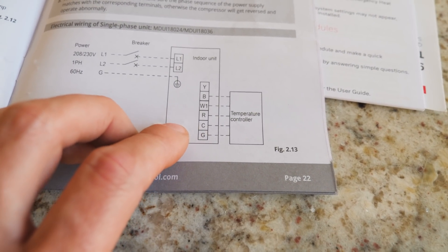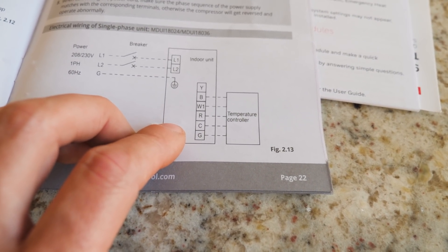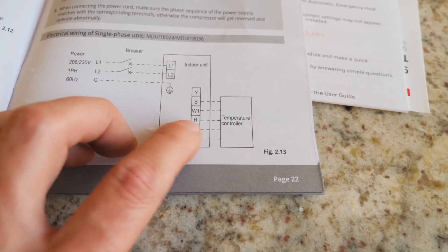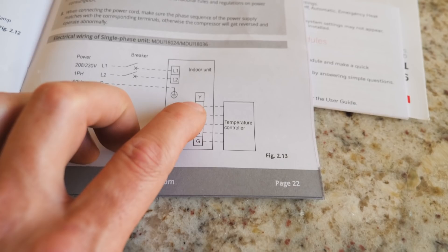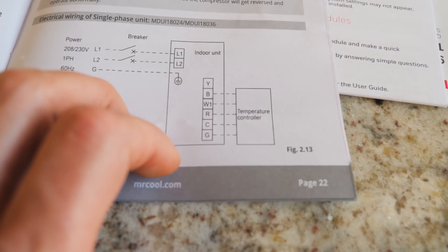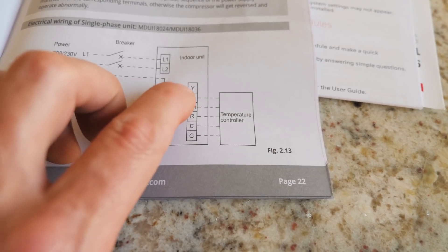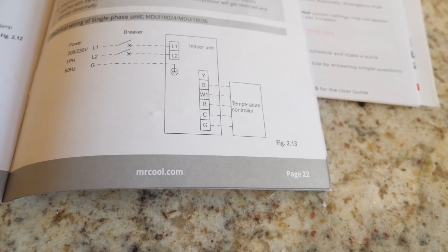But when you go to hook up the thermostat, this is the thermostat to the air handler, says hook up all these wires but there's no wire for the yellow for the compressor contactor. So I didn't plug it in and that's why my outside compressor wouldn't kick on. The air handler worked, the fan worked, everything else worked. So I went back, plugged in that wire and the compressor kicked on. The directions should be much clearer than that. Make sure you plug in your yellow wire.